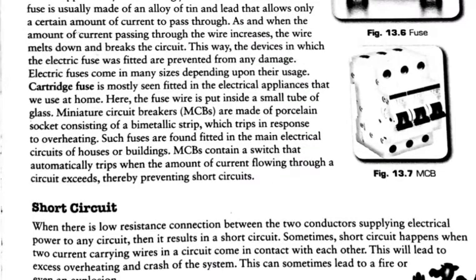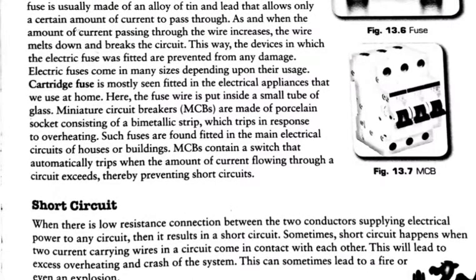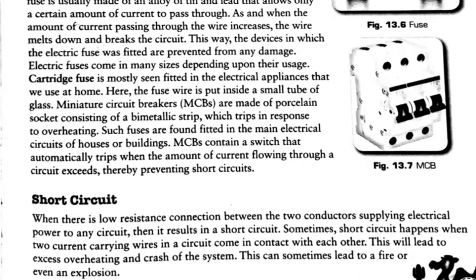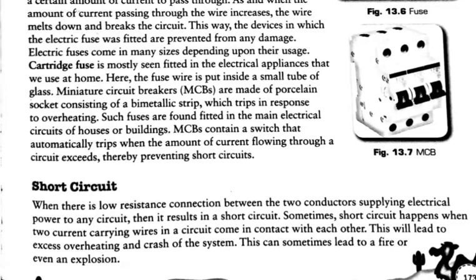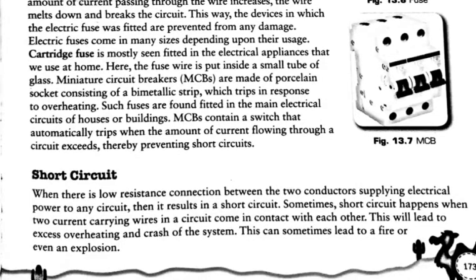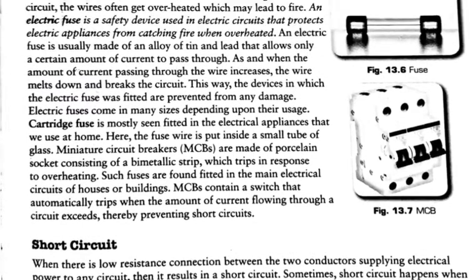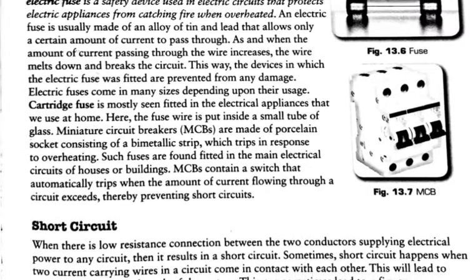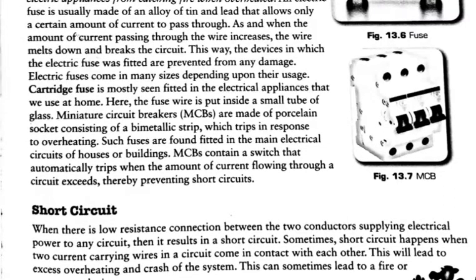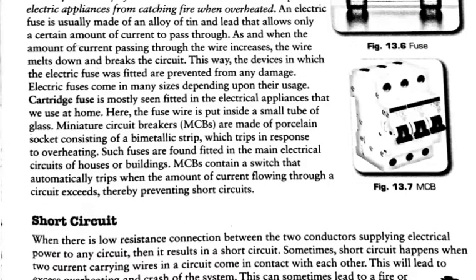The electric fuse prevents damage to the electric circuit. Fuse takes a fraction of a second to melt. Electric fuses come in many sizes and with different thicknesses, which decides their safe current limit. There is also a cartridge fuse — a special type of fuse mostly seen fitted in the electrical appliances we use at home.